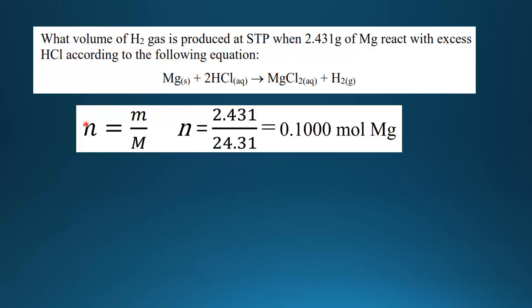The first thing we need to do is calculate the number of moles of magnesium using the equation n equals mass divided by molar mass. We have the mass of magnesium is 2.431 grams and the molar mass of magnesium is 24.31. That equals 0.1000 moles of magnesium.